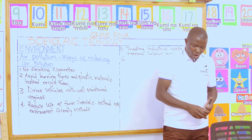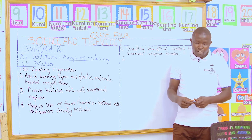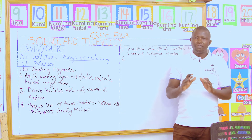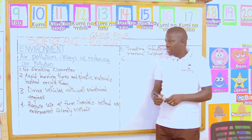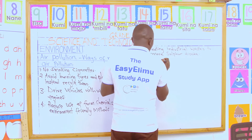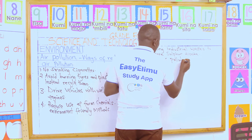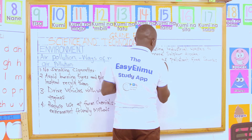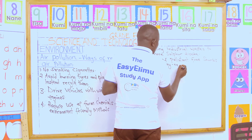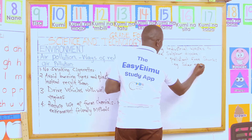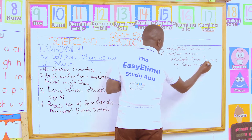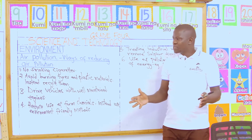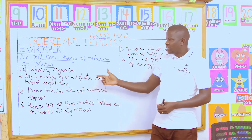And the last point is to encourage the use of pollutant-free sources of energy. A good example of this source of energy is solar energy. With solar energy, there is no use of firewood, so there is no smoke coming out.